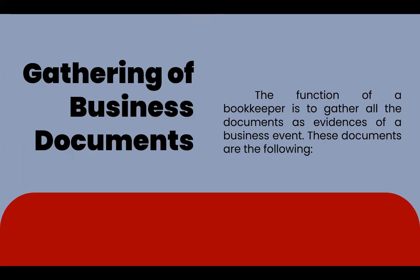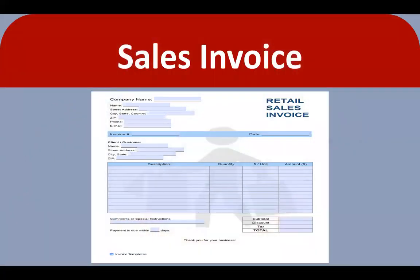Gathering of business documents: once a business opens, negotiations take place with various individuals and other institutions. In the process of negotiation, documents are drawn as evidence of transactions. The function of a bookkeeper is to gather all the documents as evidence of a business event. These documents include the sales invoice, which is issued by a firm to a customer every time a sale is made. This document indicates revenues from the sale of goods and should bear the company's name. A sales invoice may also be received from suppliers, in which case these invoices represent costs or expenses to the firm.